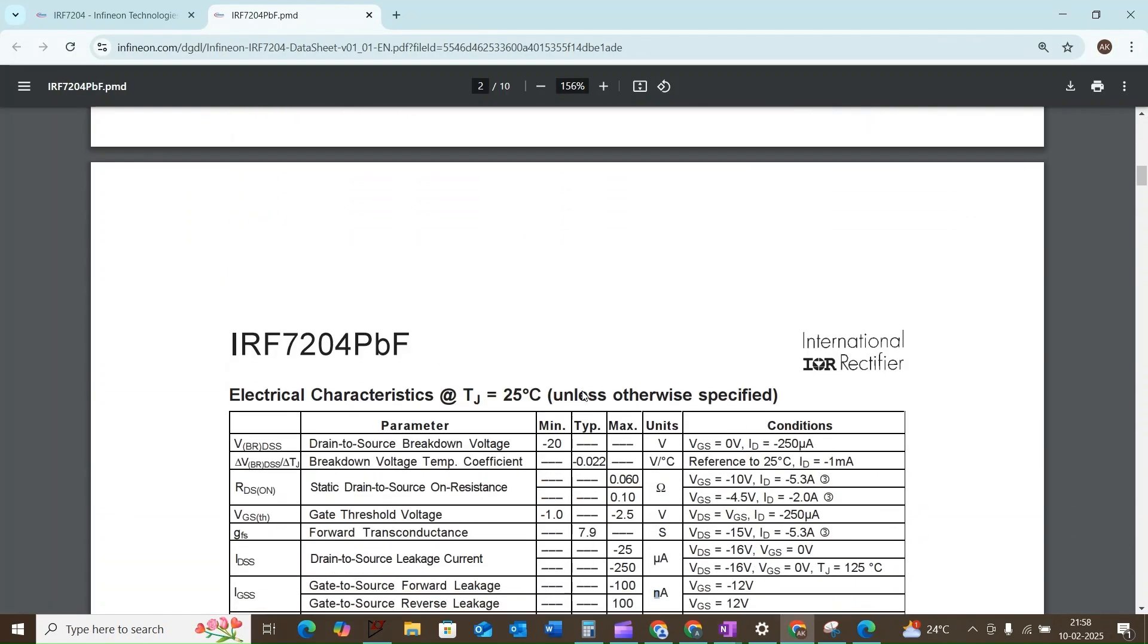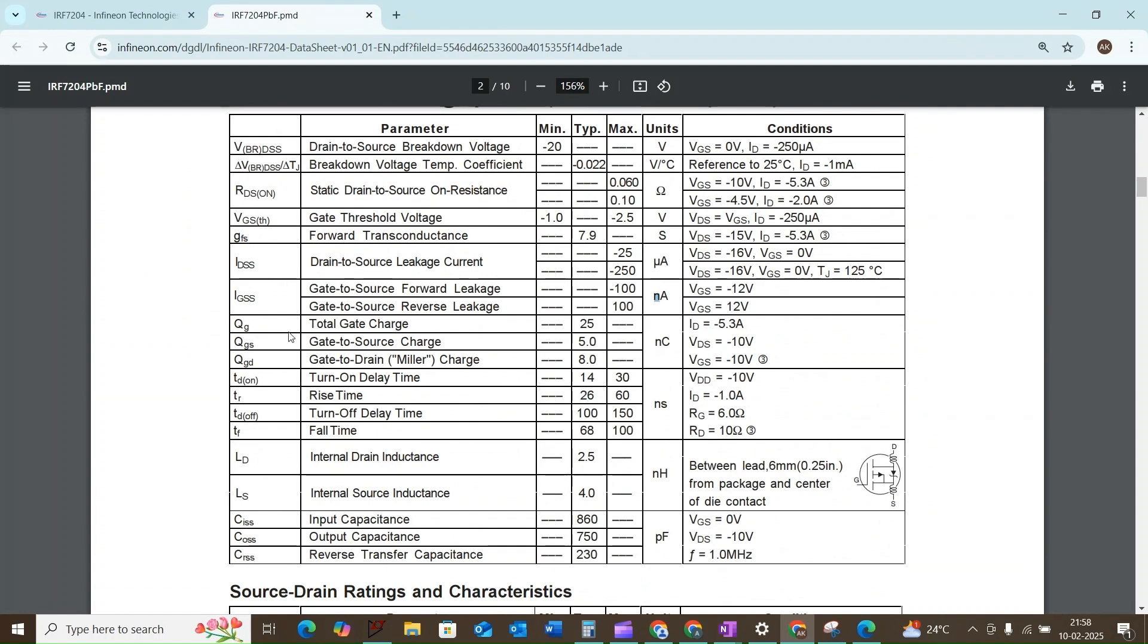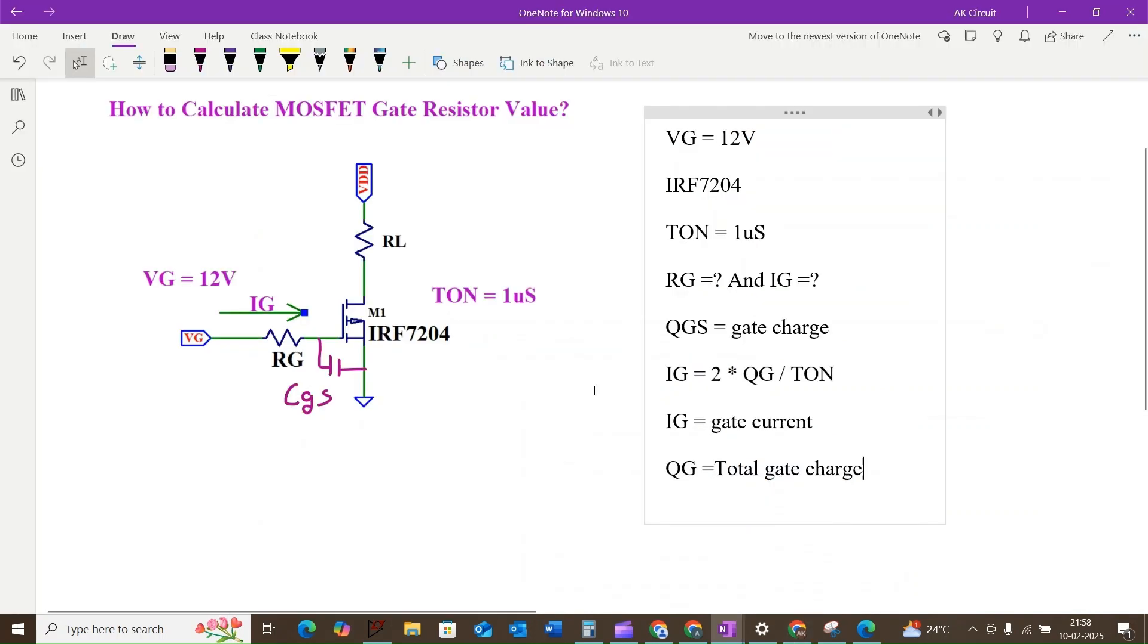If you don't know the value of QG, we can find this value in the datasheet. The total gate charge is equal to 25 nanocoulombs. Let us plug this value into our formula.